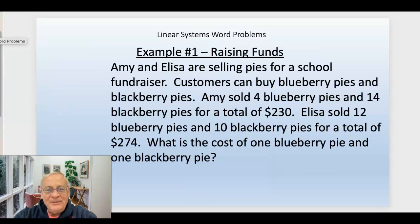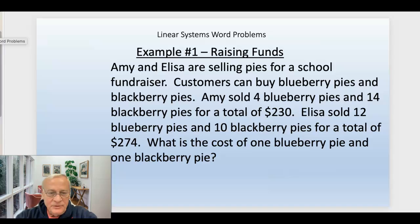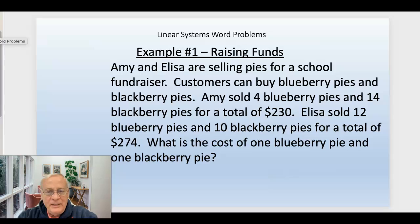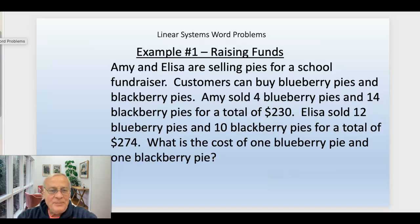Example one is raising funds. This is Amy and Elisa — they're selling pies for a school fundraiser. The customers can buy blueberry pies and blackberry pies, so those are going to be the two variables. Amy sold four blueberry pies and 14 blackberry pies for a total of $320. Elisa sold 12 blueberry pies and 10 blackberry pies for a total of $274. They're asking: what's the cost of one blueberry pie and one blackberry pie?